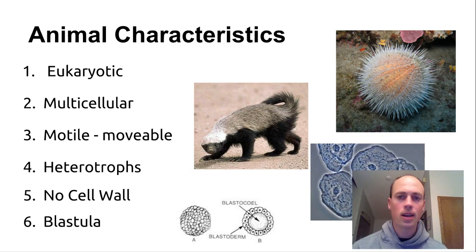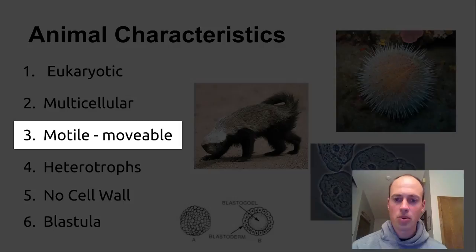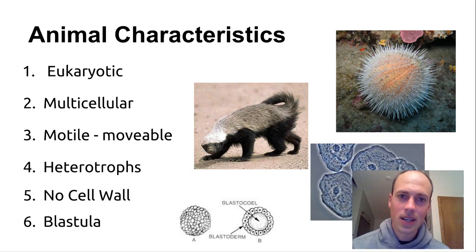They're eukaryotic — their cells have nuclei, membrane-bound organelles, mitochondria, pretty complex cell work. They are all multicellular. They're pretty mobile, some more than others. For example, I'm a lot more mobile than a sea sponge.